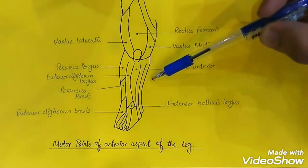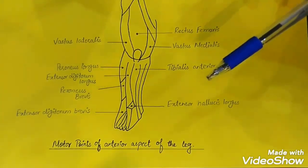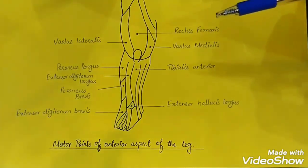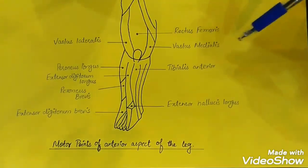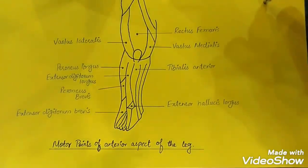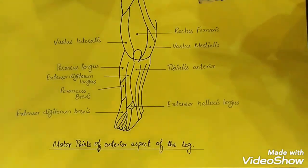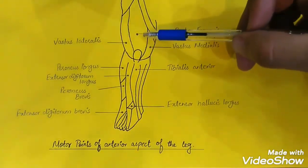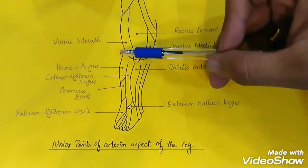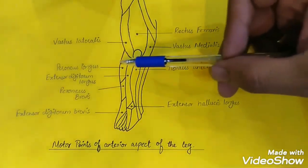You can see that all these motor points lie in the belly of the muscle. If we have to stimulate these motor points or achieve the maximum effect of any muscle to achieve its function, we have to stimulate the particular motor area so that we can have maximum contraction or achieve our desired result. To repeat: the motor points of the thigh are the rectus femoris, vastus lateralis, and vastus medialis; the leg motor points are the tibialis anterior, peroneus longus, extensor digitorum longus, peroneus brevis, extensor digitorum brevis, and extensor hallucis longus.